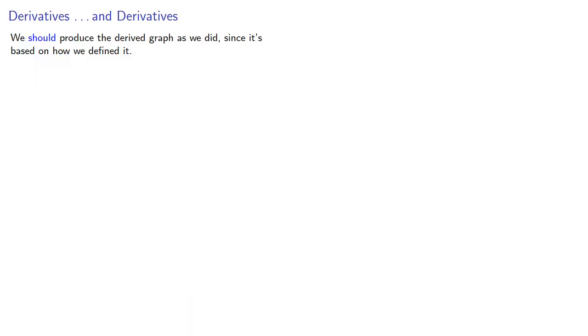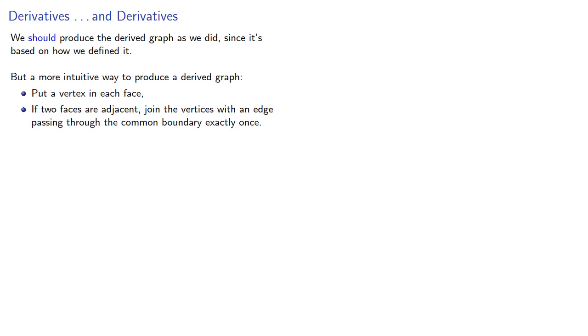We should produce the derived graph as we did, since it's based on how we defined it. But a more intuitive way to produce a derived graph is put a vertex in each face. If two faces are adjacent, join the vertices with an edge passing through the common boundary exactly once. This also produces a derived graph. But is it the same derived graph? It is, but we have to prove it. Well, actually, you have to prove it.